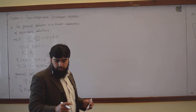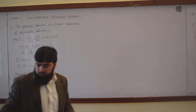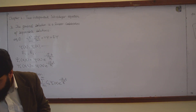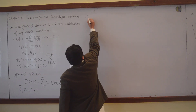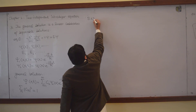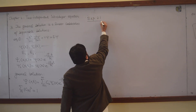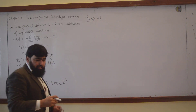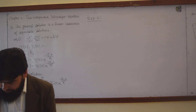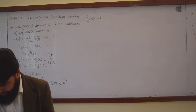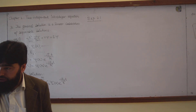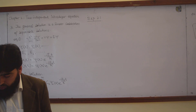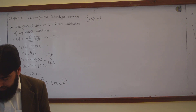This is example 2.1 from your book. The example is saying that suppose a particle starts out in a linear combination of just two stationary states.